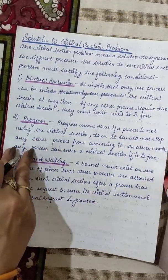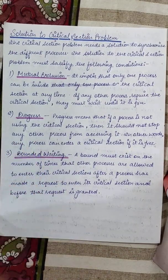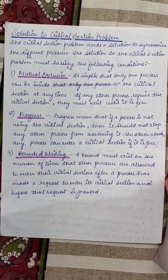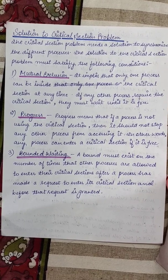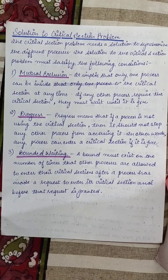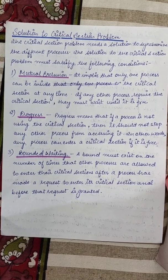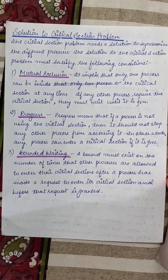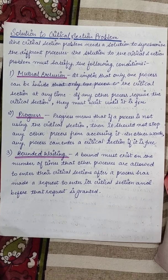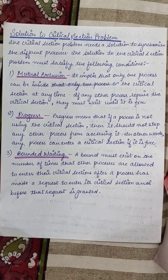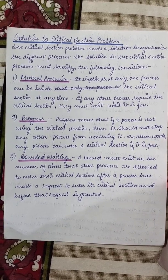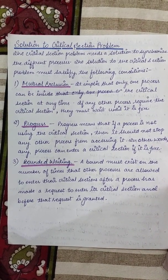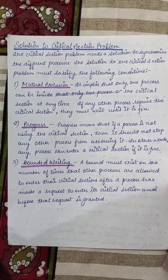To solve the critical section problem, there are three requirements to keep in mind. If a solution satisfies these parameters, we say it correctly solves the critical section problem. The three parameters are: mutual exclusion, progress, and bounded waiting. Mutual exclusion implies that only one process can be inside the critical section at any time. If more than one process is in the critical section, then the solution is not correct.